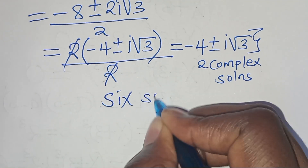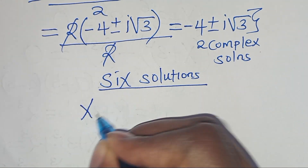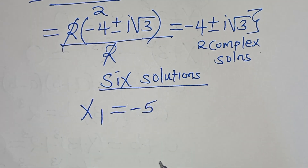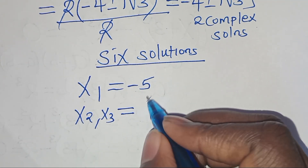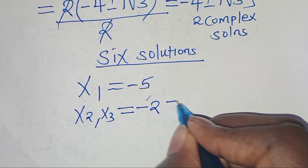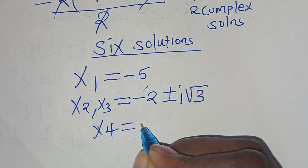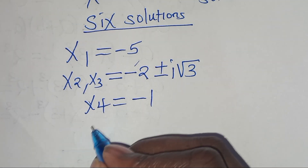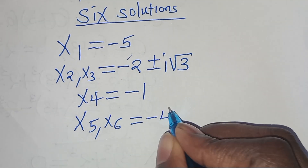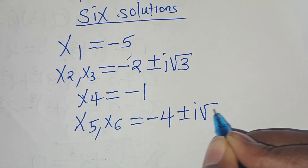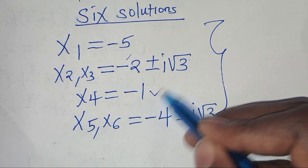We have 6 solutions: x1 is equal to minus 5; x2 and x3 are equal to minus 2 plus or minus i square root of 3; x4 is equal to minus 1; and x5 and x6 are equal to minus 4 plus or minus i square root of 3. We have 4 complex solutions and 2 real solutions in total.